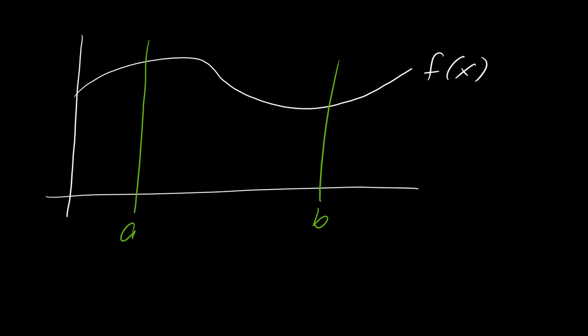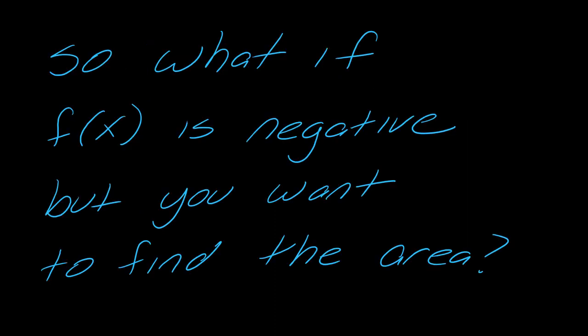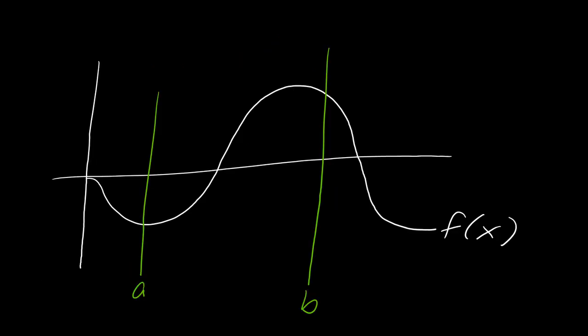Now just a quick other question with this. What if f(x) is negative, but you still want to find the area? So this comes up from time to time. Let's say that I have a function maybe that looks like this, and so I want to find these two different areas. So technically what you could do is you could actually break these up.